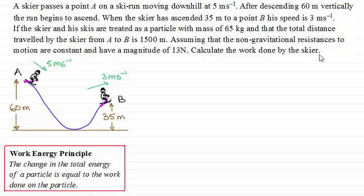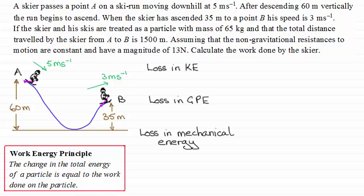Now the method we're going to use for a problem like this is to first of all look at what the loss in kinetic energy is. And then we're going to look at the loss in gravitational potential energy. And then by adding these two together we can work out what the loss in mechanical energy is.